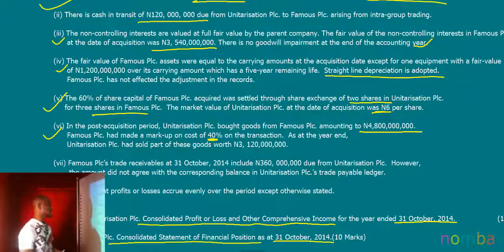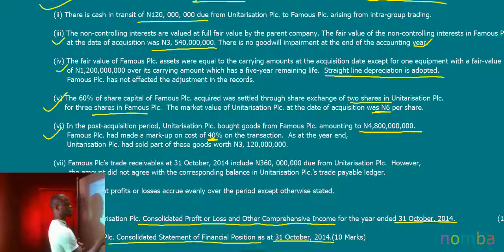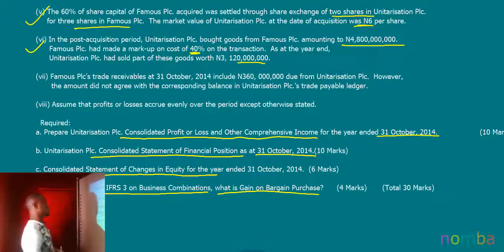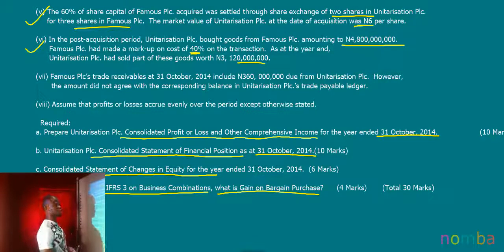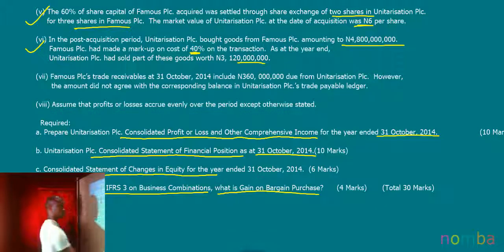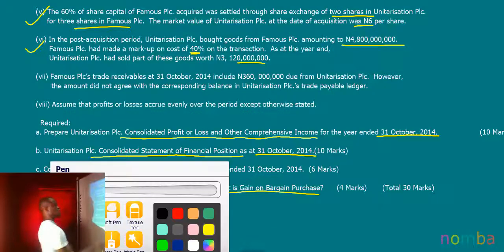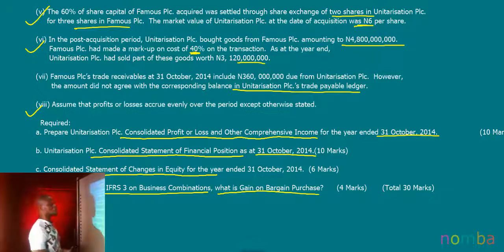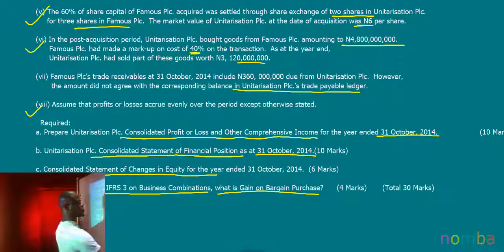As at the year-end, Unitarization PLC had sold part of these goods worth 3,120 million. We are also told that Famous PLC's trade receivables at 31st October 2014 include 360 million due from Unitarization PLC; however, this amount did not agree with the corresponding balance in Unitarization PLC's trade payables ledger. Finally, we should assume that profits or losses accrue evenly over the period except otherwise stated.